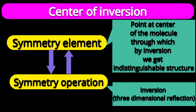Let us discuss one more symmetry element and its operation, and that element is center of inversion or center of symmetry. A symmetry element is a collection of points which do not change their position during symmetry operations, and various symmetry operations are possible on one symmetry element. An operation is an action that we perform that is related to the symmetry element.